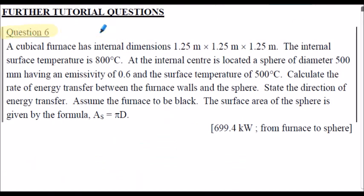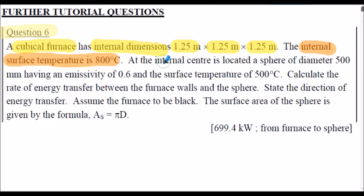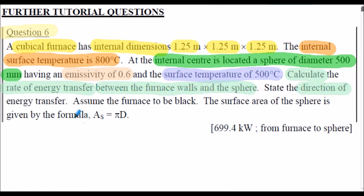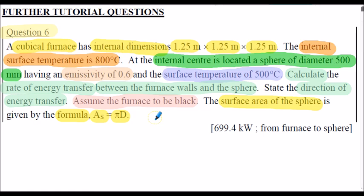Question 6, extracted from the workbook. A cubicle furnace has internal dimensions of 1.25 metres along each side. The internal surface temperature of the furnace is 800 degrees C. At the internal centre of the furnace is located a sphere of diameter 500 millimetres, having an emissivity of 0.6 and a surface temperature of 500 degrees C. We're asked to calculate the rate of heat transfer between the furnace walls and the sphere and state the direction of energy transfer. We can assume the furnace to be black.